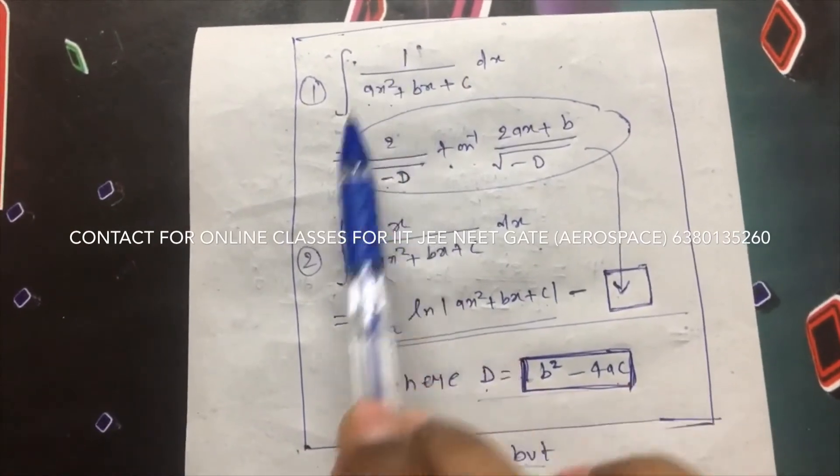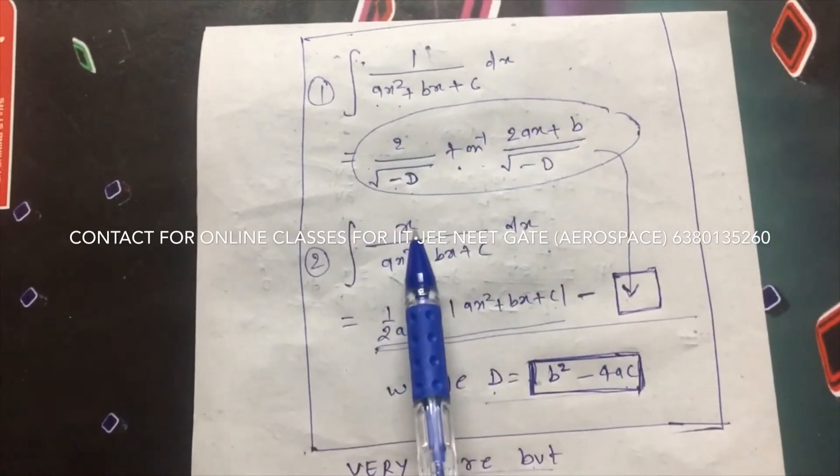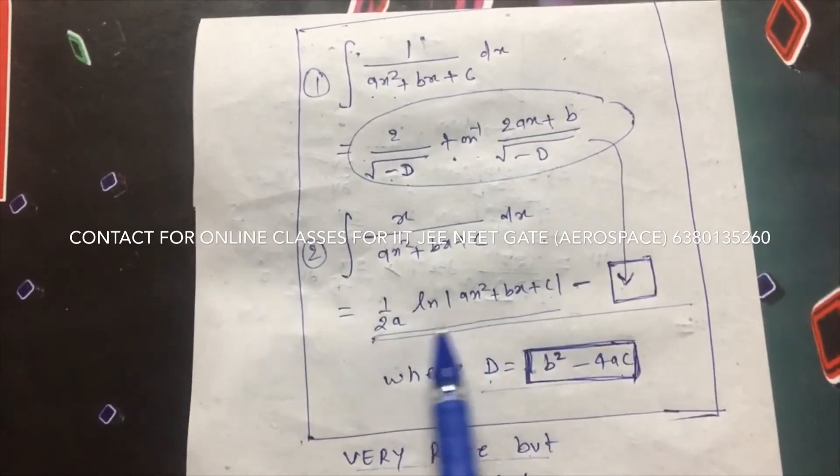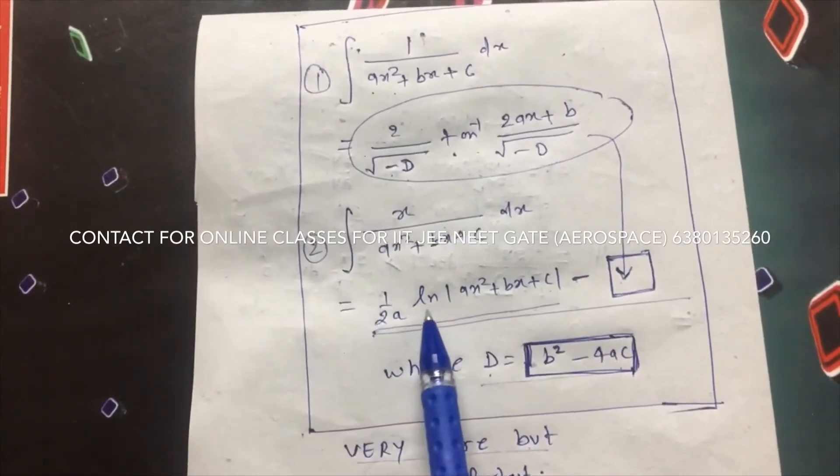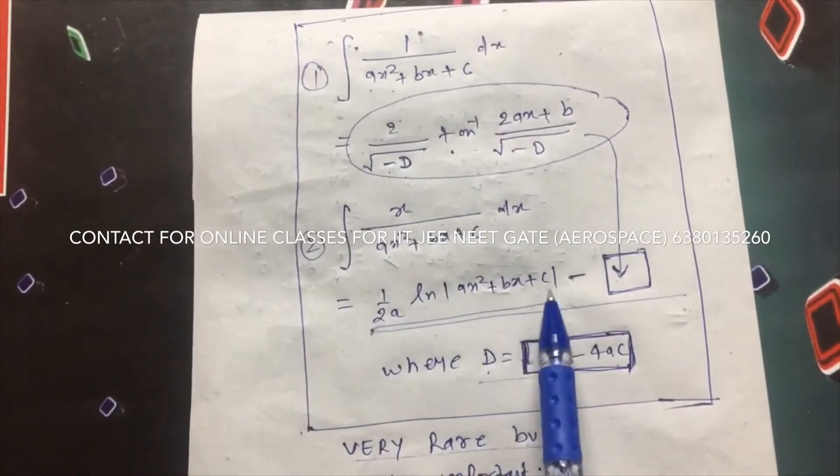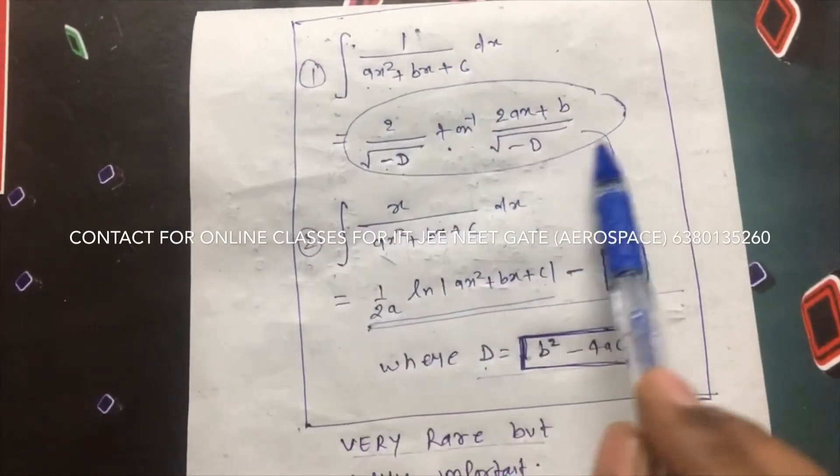And if you have 1 here, use this. If you have x here, then this term will come extra, meaning 1 by 2a ln of mod of ax square plus bx plus c. Whatever answer we are getting here, same.